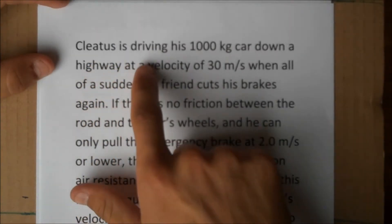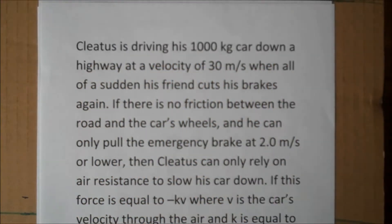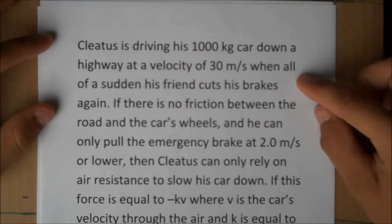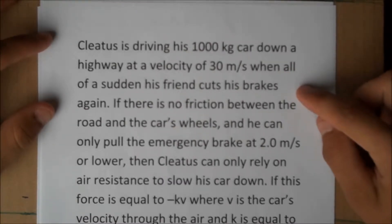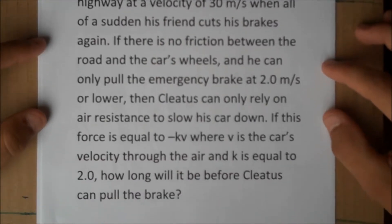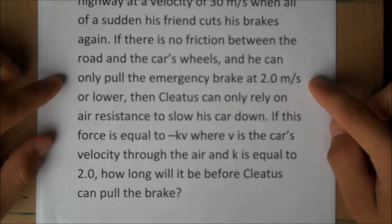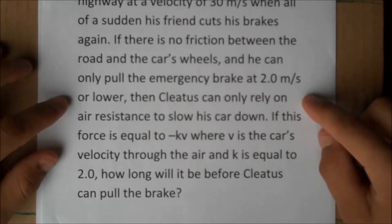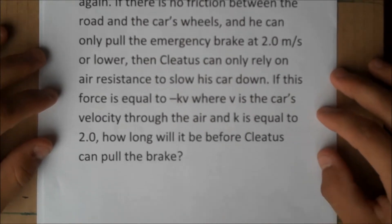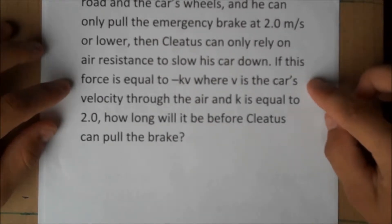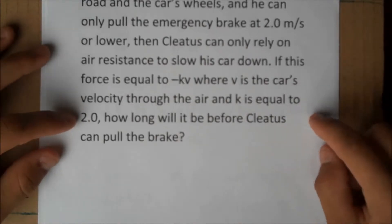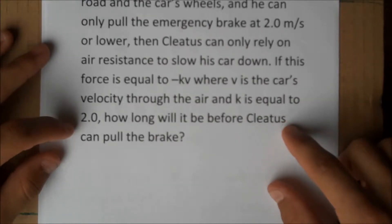Here's our problem. Cletus is driving his 1,000 kilogram car down a highway at a velocity of 30 meters per second when all of a sudden his friend cuts the brakes again. If there is no friction between the road and the car's wheels, and he can only pull the emergency brake at 2 meters per second or lower, then Cletus can only rely on air resistance to slow his car down. If this force is equal to negative kv, where v is the car's velocity through the air, and k is equal to 2.0, how long will it be before Cletus can pull the brake?